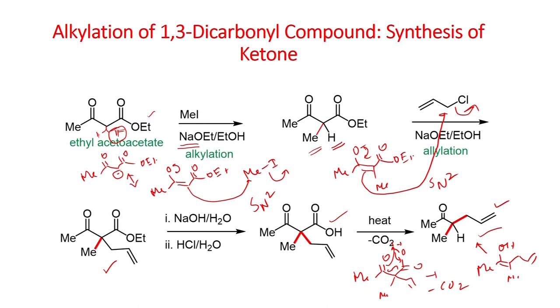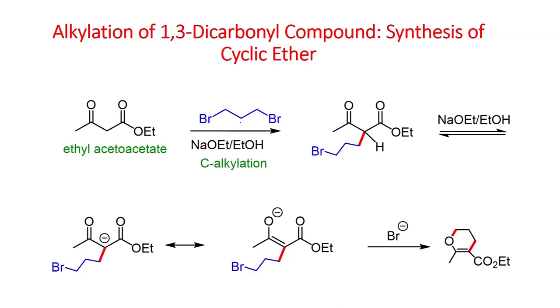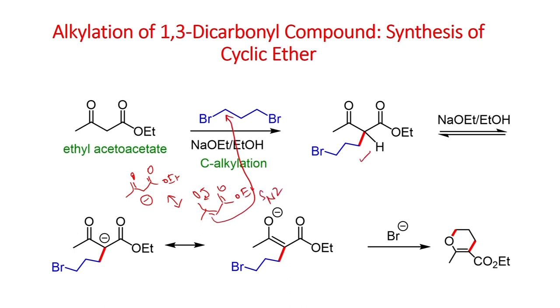Now let us look at the reaction of ethyl acetoacetate with 1,3-dibromopropane. As we have seen earlier with two different alkyl halides — first the reaction of methyl iodide and then allyl chloride — in this case, the substrate undergoes reaction as seen earlier with base to form the enolate, and this can undergo reaction via SN2, where you get this alkylation compound.